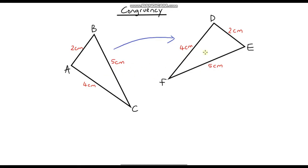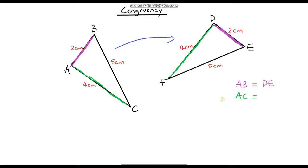Congruent shapes always have corresponding sides. Let's think about which sides correspond with which. This side here corresponds with this side here, so side AB is equal to side DE. Side AC, which is the four centimetre length, corresponds with FD, so AC equals FD. And finally, side BC corresponds with FE, so side BC is equal to FE.